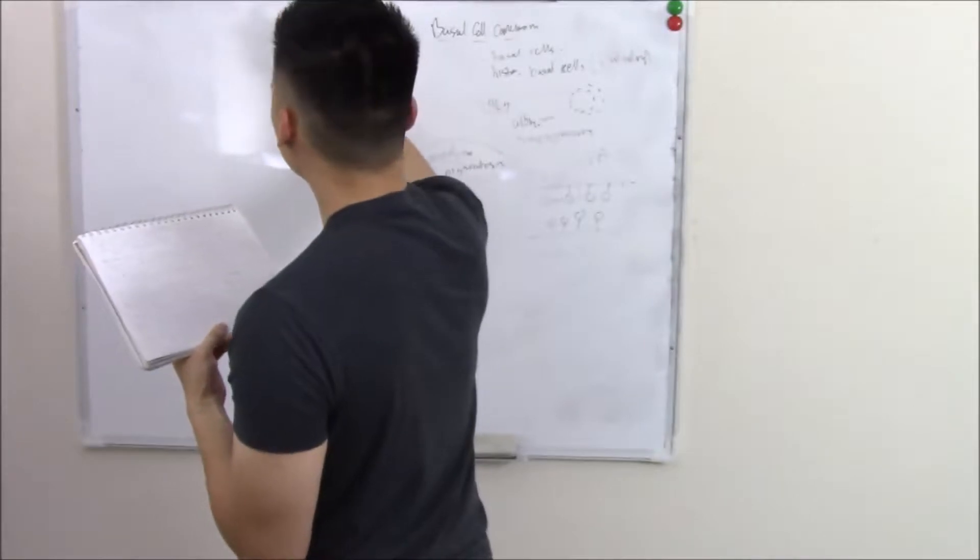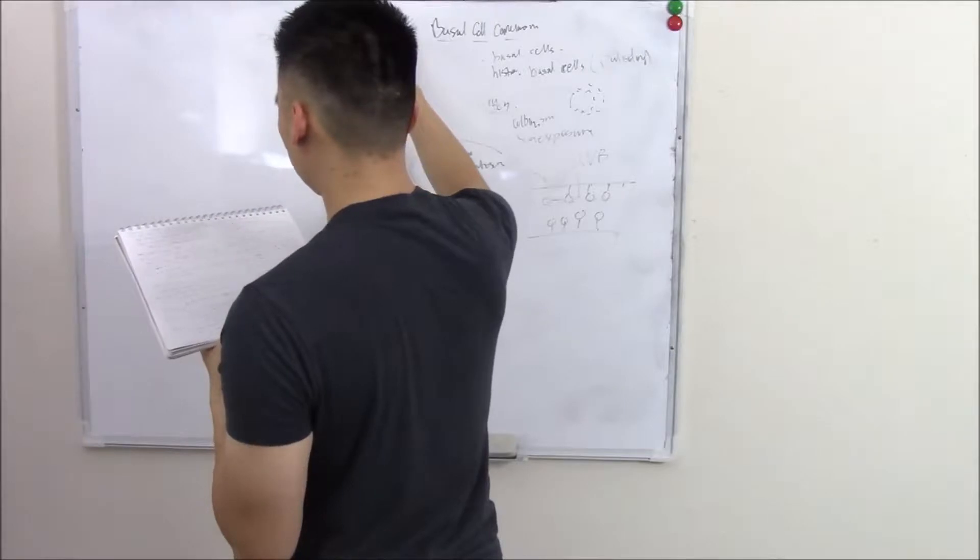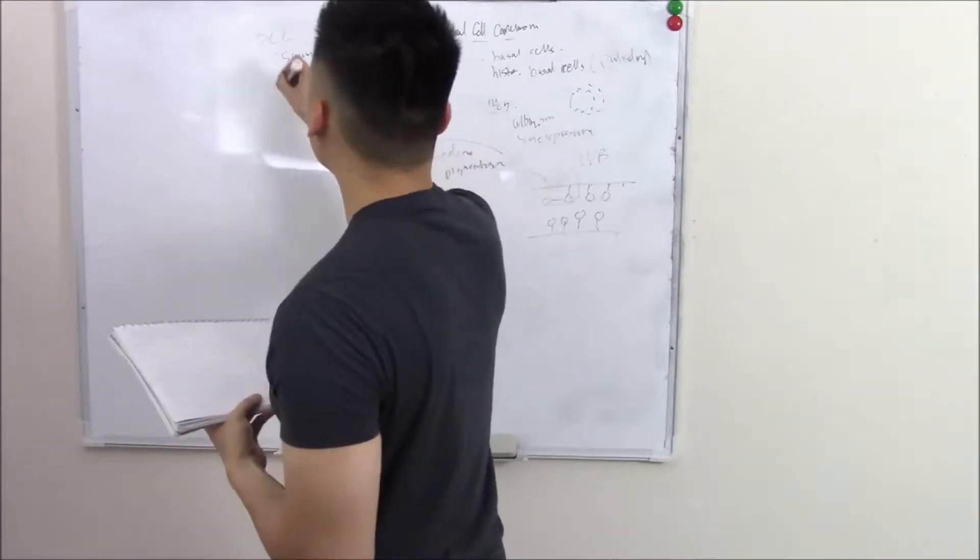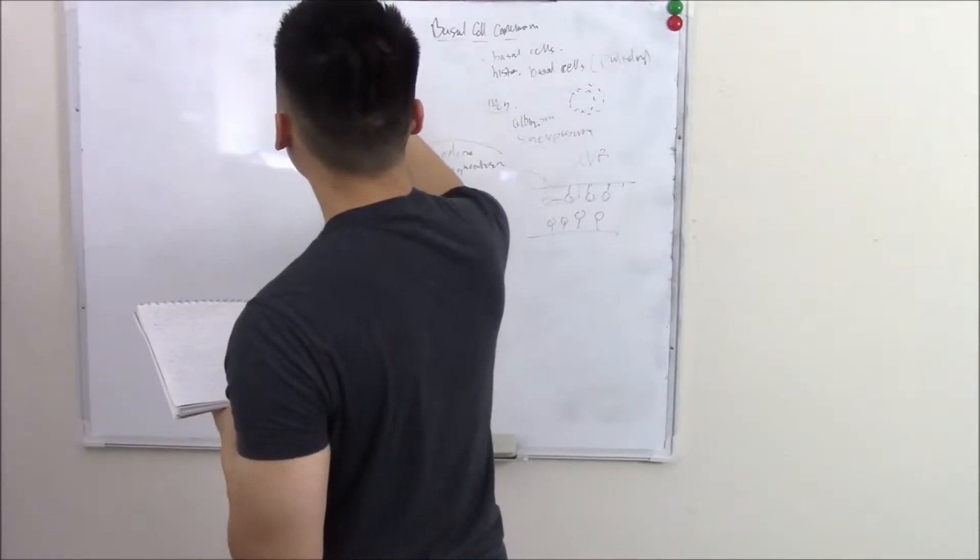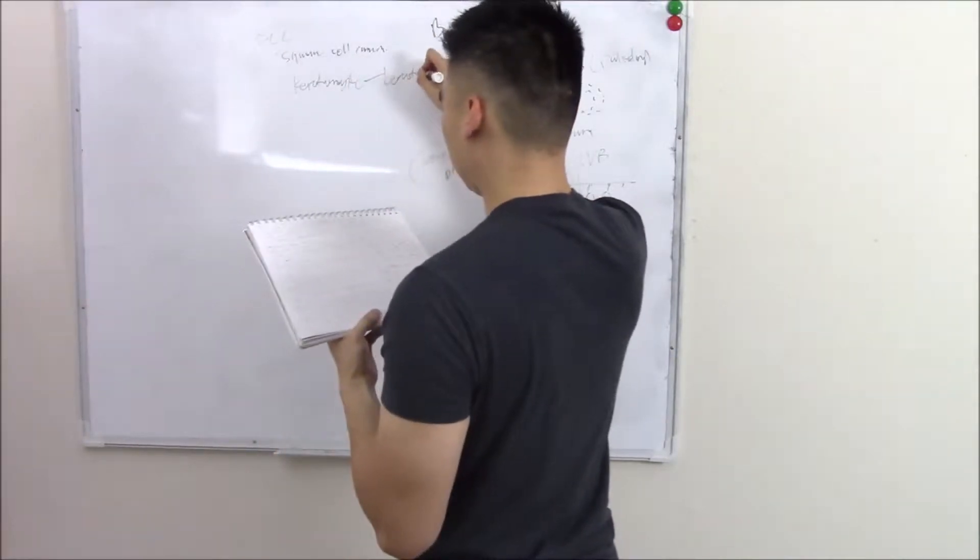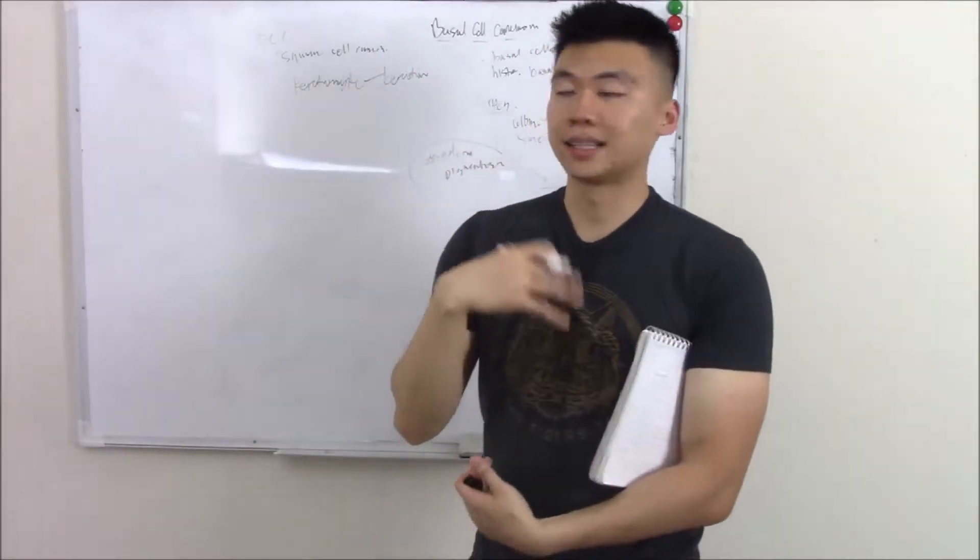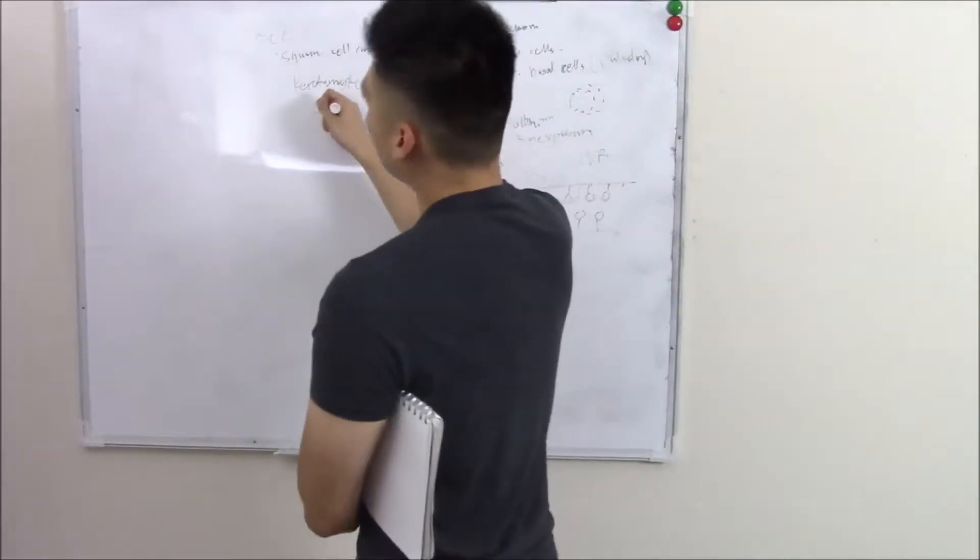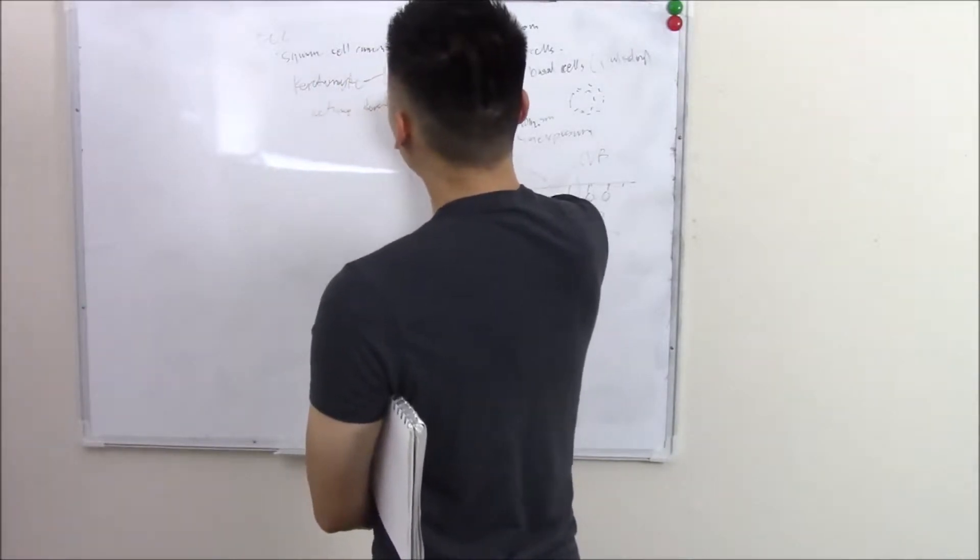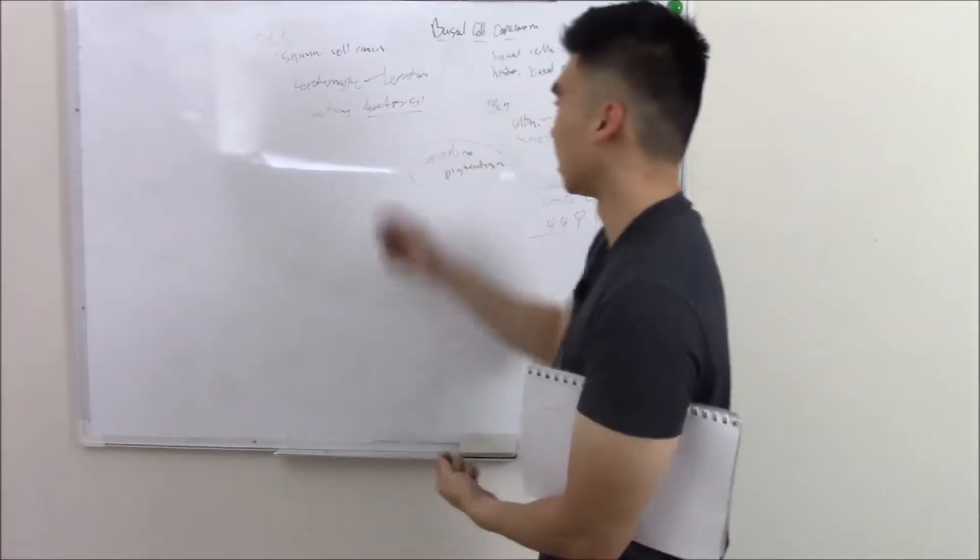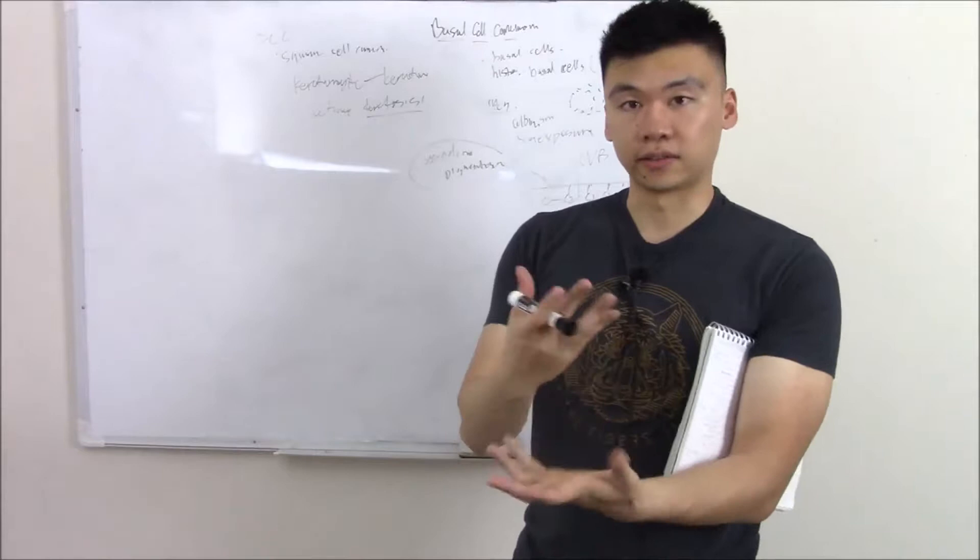Next up is SCC. This stands for squamous cell carcinoma. It's basically a cancer of your keratinocytes. And because of that you have a ton of keratin. If you recall, one of the precursor lesions was actinic keratosis. I'm going to emphasize on that keratin. You have increased keratin, keratosis. And it looked kind of scaly, it looked kind of flaky from all that keratin.